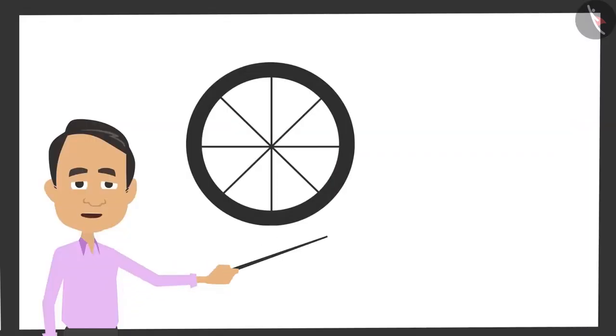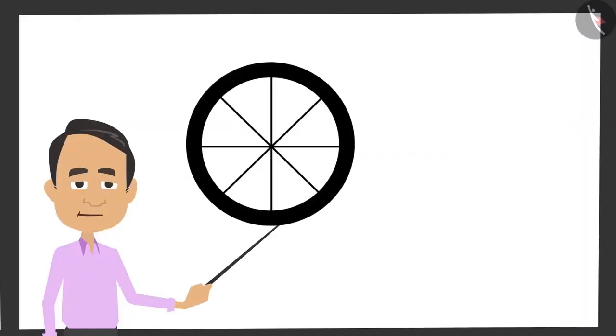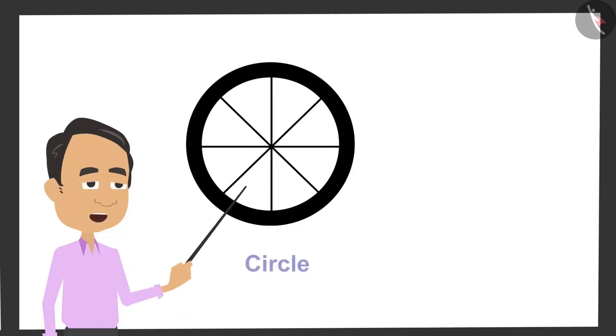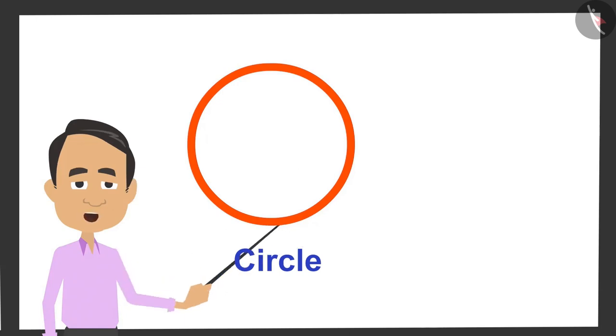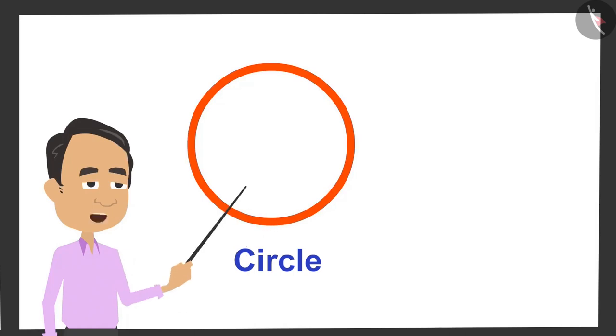Firstly, I will show you the wheel of a bicycle. It is round, that is, in the shape of a circle. Let's make a simple drawing of this wheel so that it is easy to understand. Now, the first thing you need to know about a circle is that it is a closed shape, because it has a boundary on all sides.